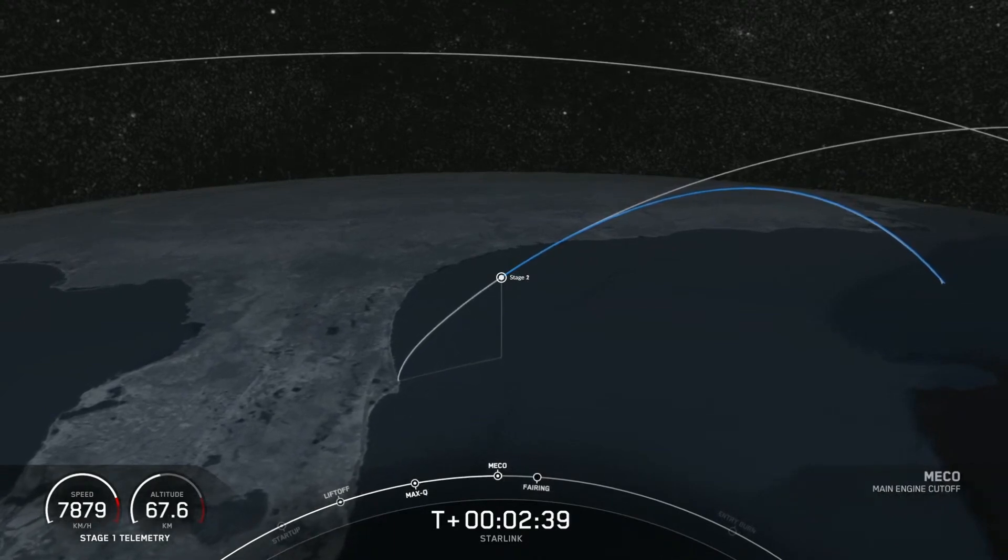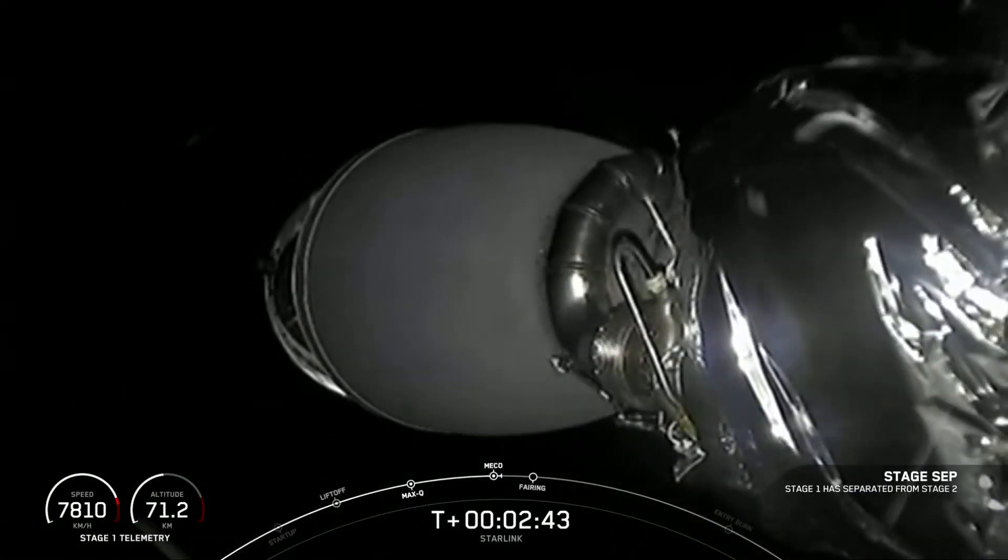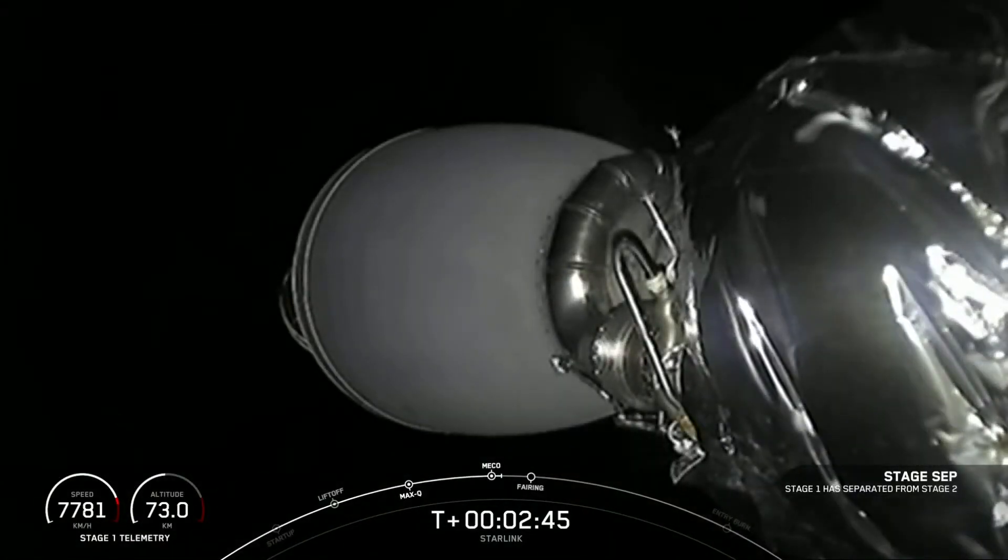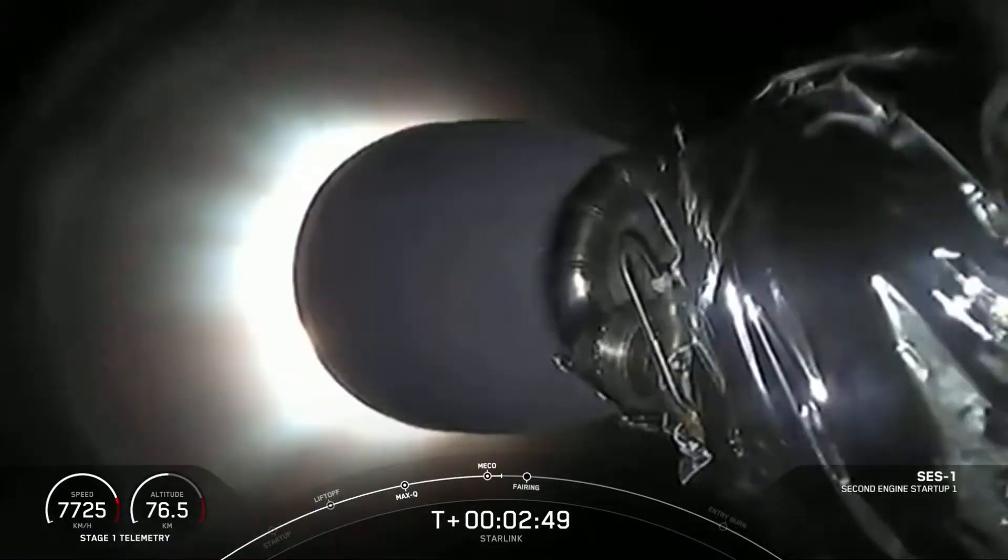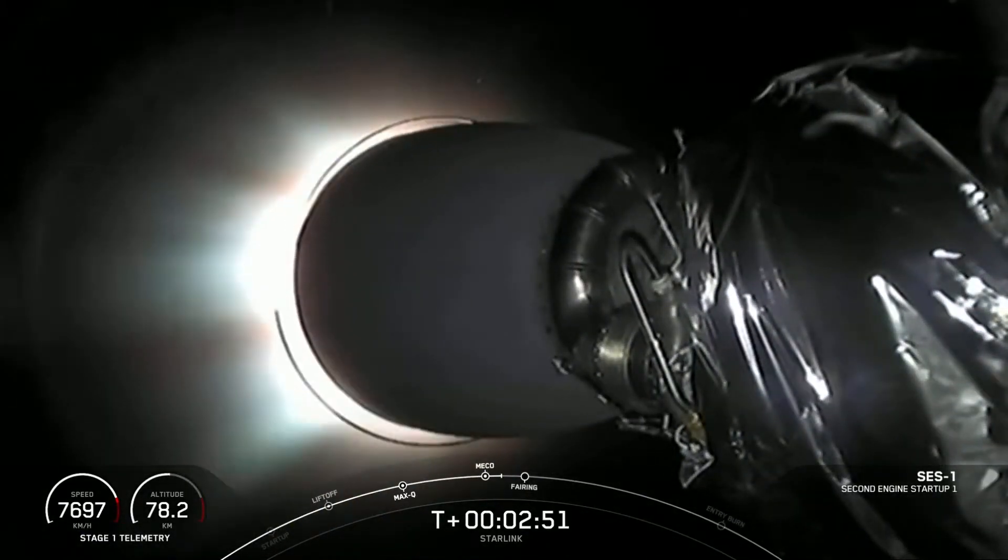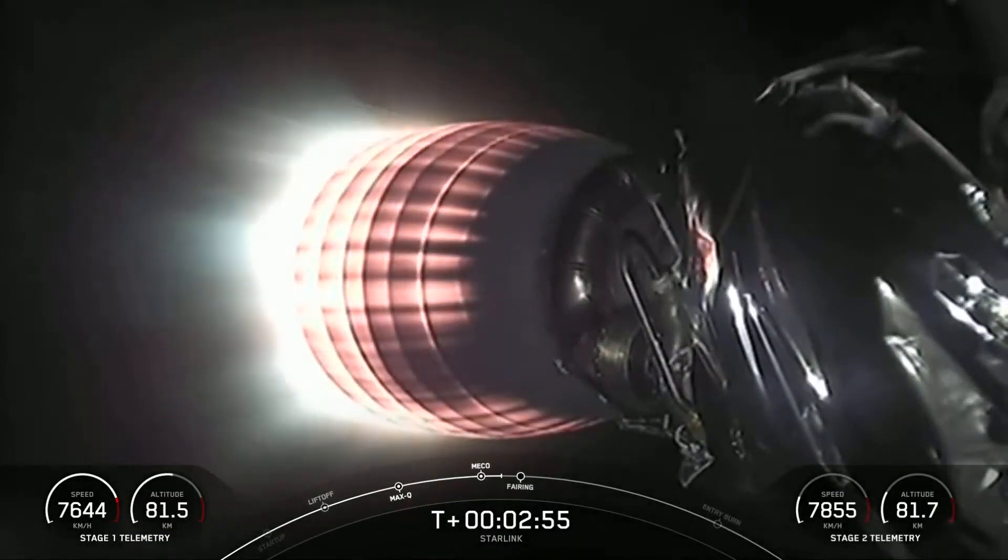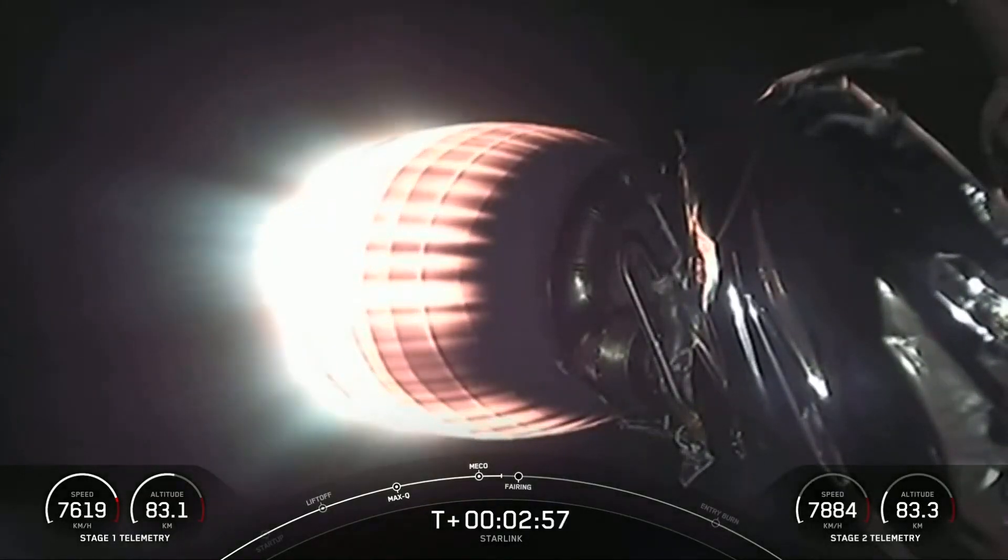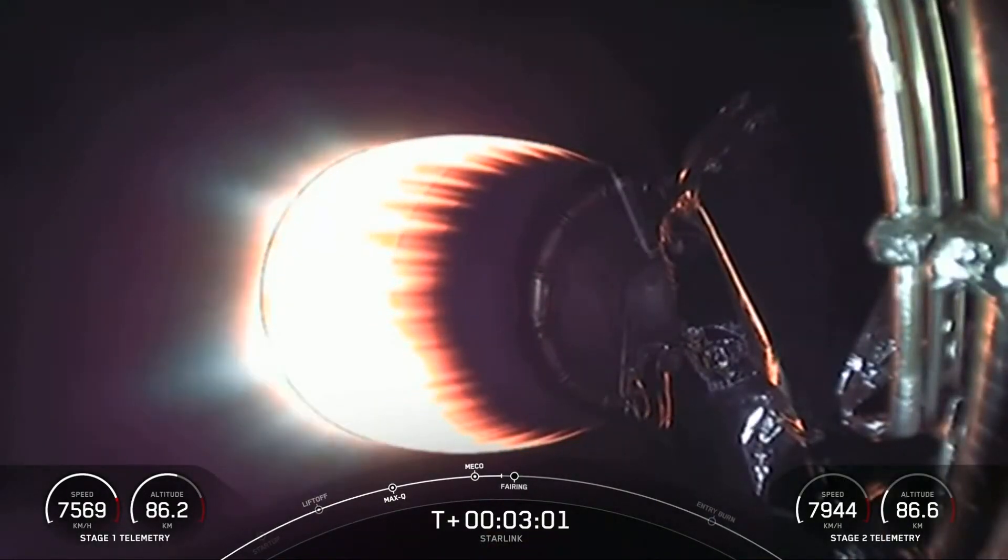MECO. Stage separation confirmed. M-Vac ignition. And you saw the visuals on screen. The first stage separated from the second stage, making its way back to Earth. And we have a beautiful start-up of the Merlin vacuum engine on the second stage.